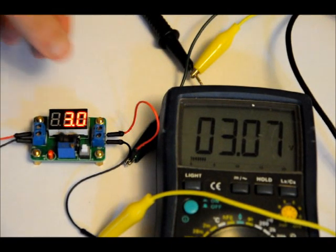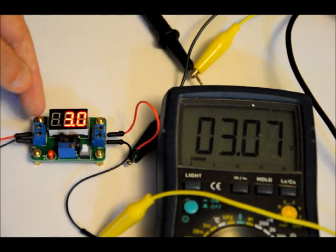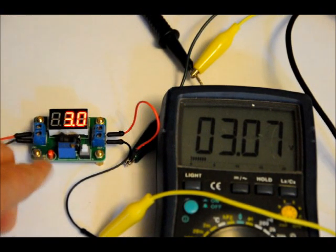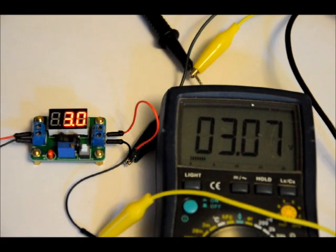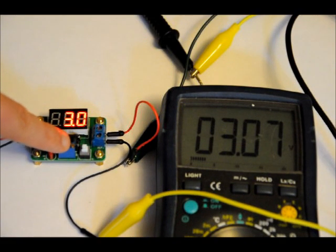It's a DC to DC power supply with a little voltage display on it. You can take 0 to 24 volts at the input labeled IN plus and IN minus. IN minus being ground, IN plus being your DC input positive source. You can vary the output by tuning this variable resistor.